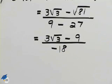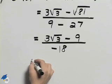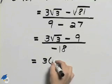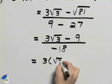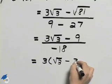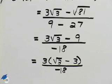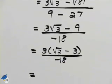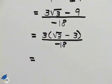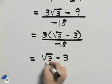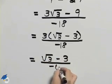Now we can further simplify this by factoring a 3 from the top and so we'll have 3 times the square root of 3 minus 3 all over negative 18. 3 goes into 18 6 times so we'll have the square root of 3 minus 3 all over negative 6.